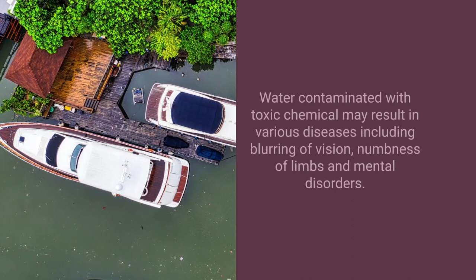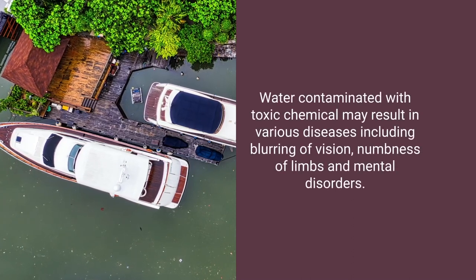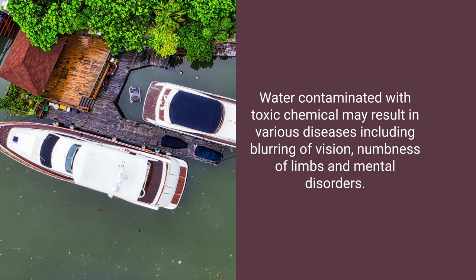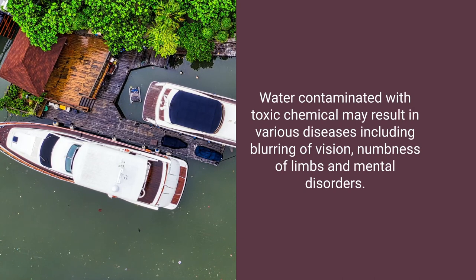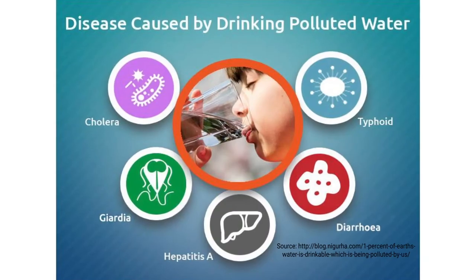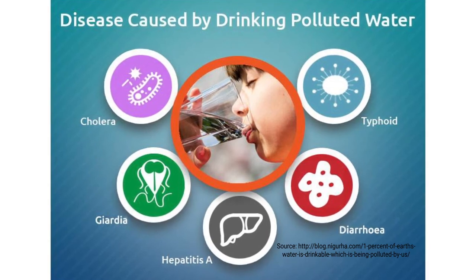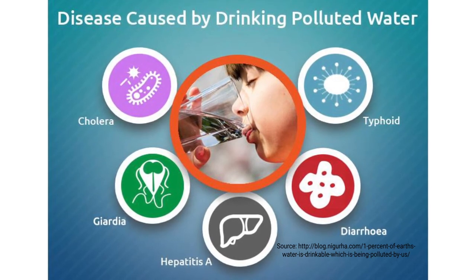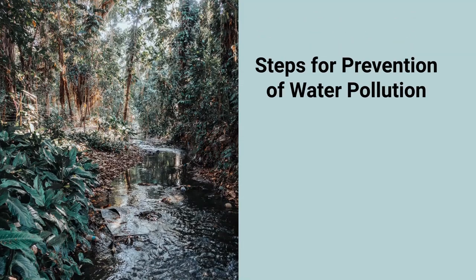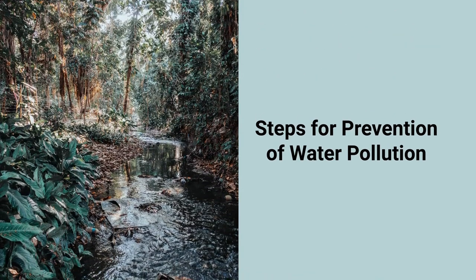Water pollution affects the fertility of soil used for irrigation. Water contaminated with toxic chemicals may result in various diseases including blurred vision and numbness of limbs. You can ask your students to make paintings or designs about the effects of water pollution. Diseases caused by polluted drinking water include cholera, typhoid, diarrhea, hepatitis A, and giardia.